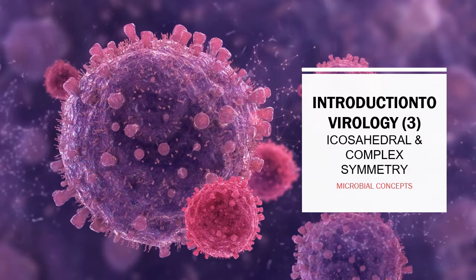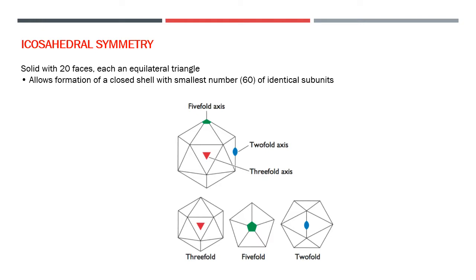We had finished helical symmetry, so next is icosahedral symmetry. For a question on icosahedral symmetry, you need to draw these particular diagrams. At least mention the axes: 5-fold, 2-fold, and 3-fold. For icosahedral symmetry, let's consider an example which has a solid with 20 faces and equilateral triangles.